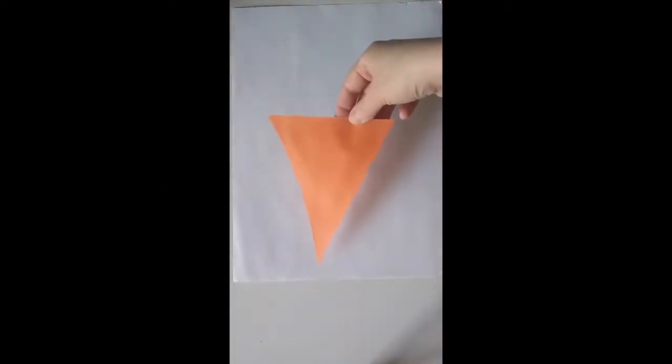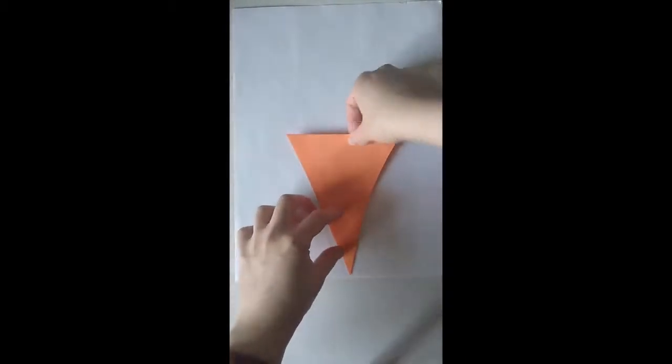So, we're going to use construction paper and cut out another triangle. And it doesn't have to be perfect. Here's our triangle. We're going to glue it at the bottom of our paper, bottom and the middle. So, I'm just going to put some glue. I'm going to put it over here.